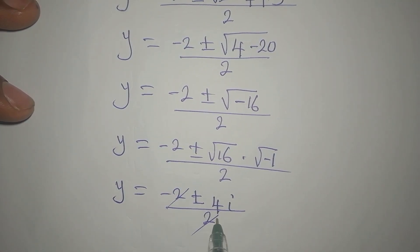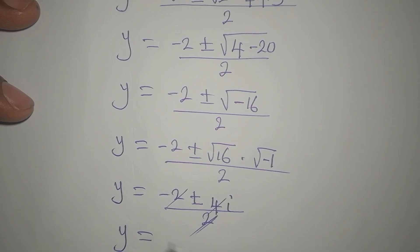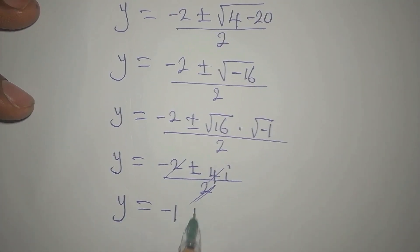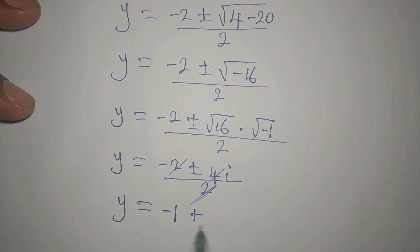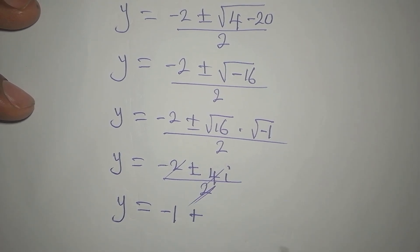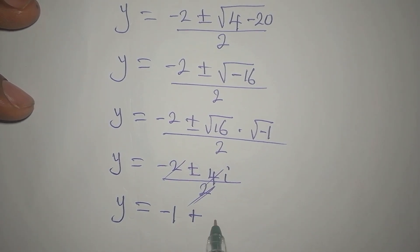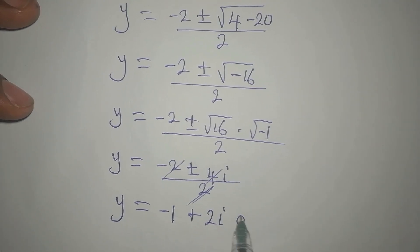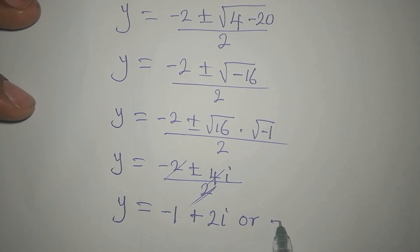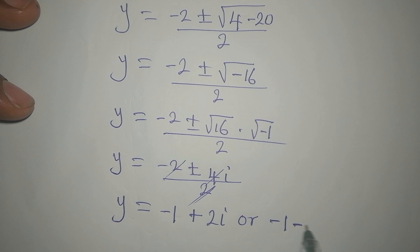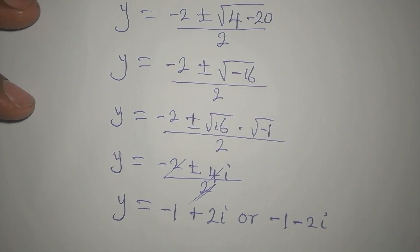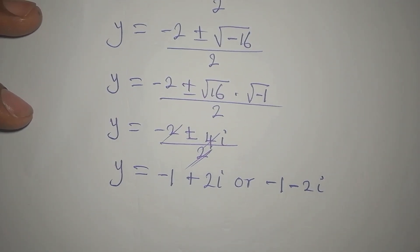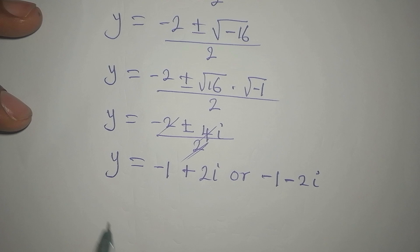Dividing through by 2, Y equals negative 1 plus 2i, or Y equals negative 1 minus 2i. But remember, we are not looking for Y — we are looking for X.